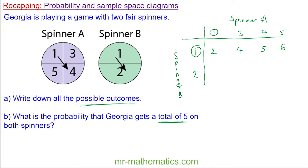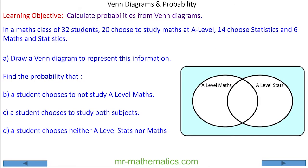If we get a 2 on spinner B: 1 and 2 is three, 3 and 2 is five, 4 and 2 is six, and 5 and 2 is seven. What is the probability that Georgia gets a total of five on both spinners? There are eight outcomes in total and two of them have a total of five — two out of eight, which simplifies to one quarter.